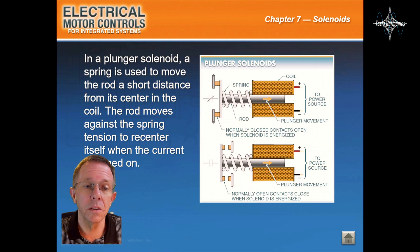In a plunger solenoid, a spring is used to move a rod a short distance from its center in the coil. The rod moves against the spring tension to recenter itself when the current is turned on.